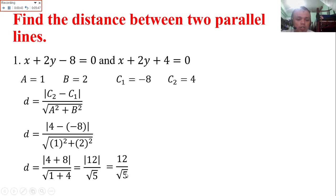Again, 5 is not a perfect square. Get the approximate value. We have 12 over 2.24 which equals 5.37. That is the distance.